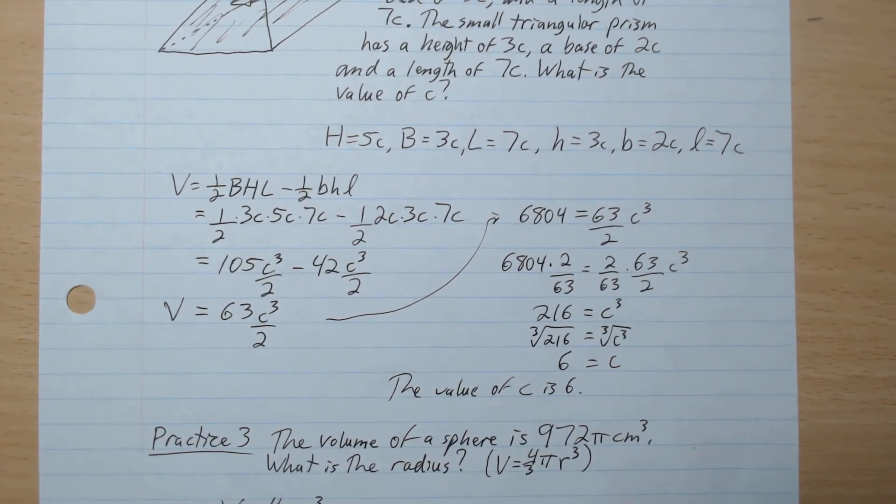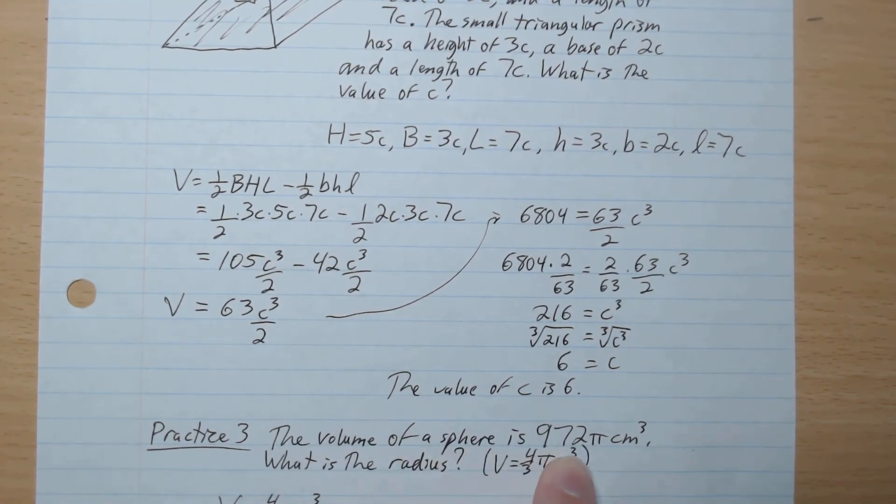Practice number 3. The volume of a sphere is 972π centimeters cubed. What is the radius? So volume is 4 over 3π r³. So go ahead and find the radius.